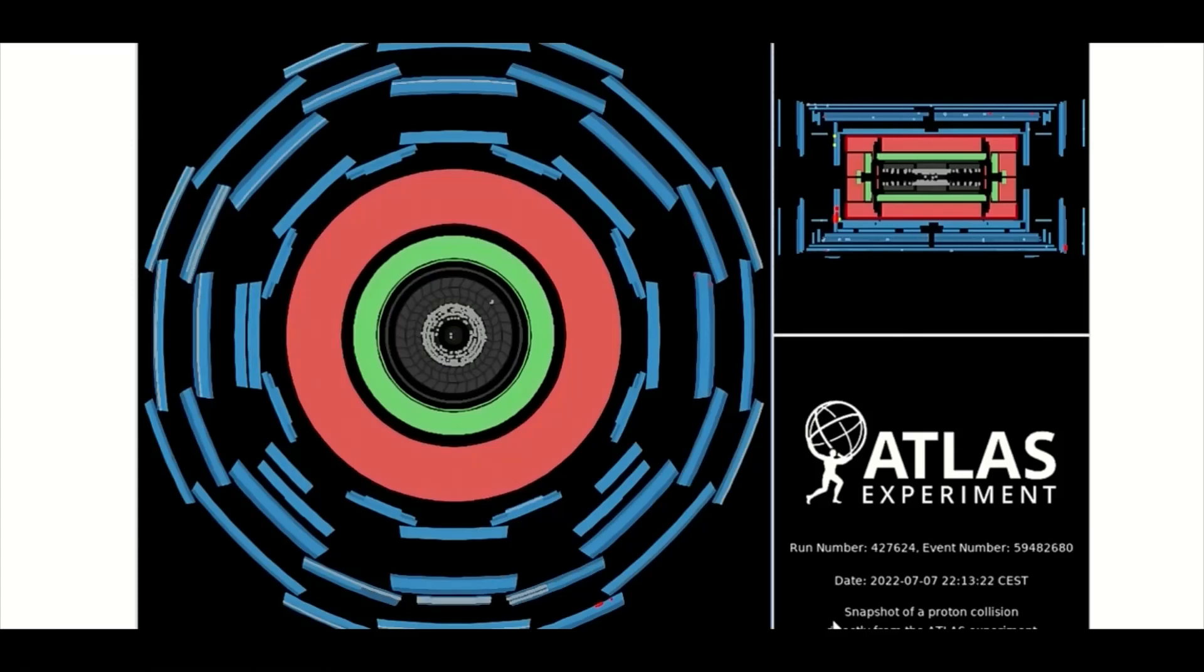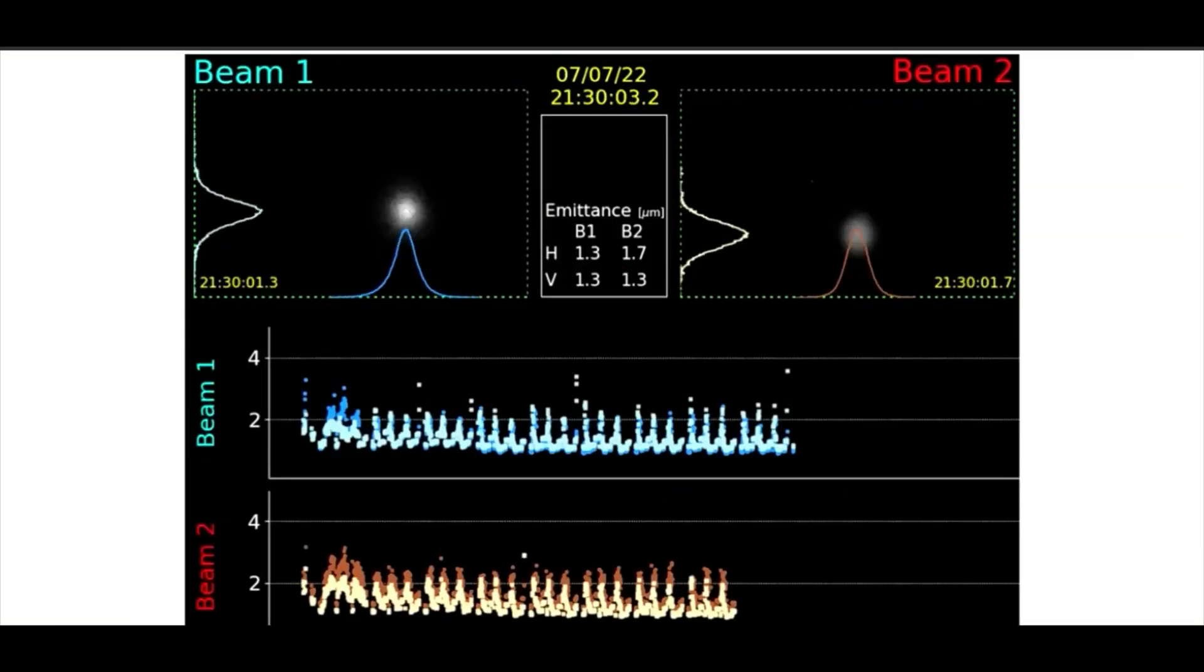Here is what is seen regularly when in operation. Up next is beam 1 and beam 2, shown as the emittance, being dialed in for another collision.